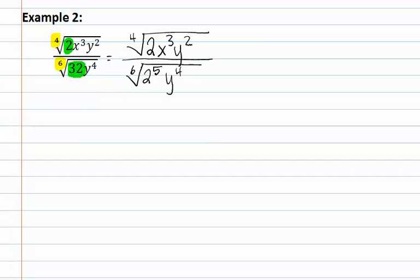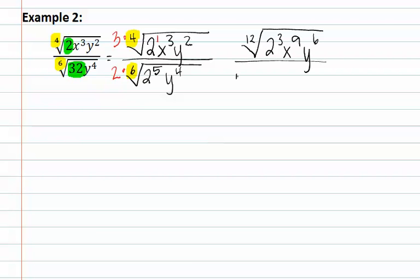Now that we have factored any numbers underneath the radical, we can get a common index. We look at the two indexes, which are 4 and 6. The common index would be 12, meaning we would multiply the top by 3 and the bottom by 2. Remember, anything without an exponent — such as this 2 — has an exponent of 1. We now multiply the index and all exponents by 3, giving us the 12th root of 2 to the 3rd, x to the 9th, y to the 6th. And this is over the 12th root of 2 to the 10th, y to the 8th.